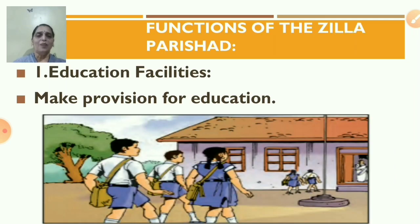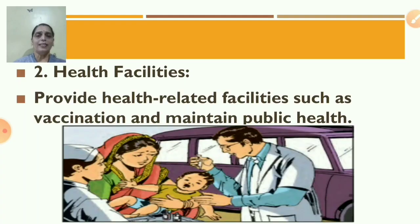Now we are going to see the functions of the Jilla Parishad. First is education facilities — the Jilla Parishad makes provision for education. Next is health facilities — it provides health-related facilities such as vaccination and maintains public health.